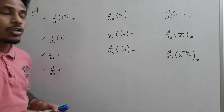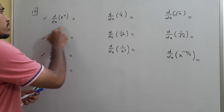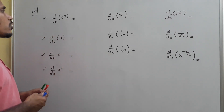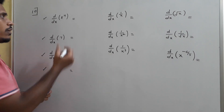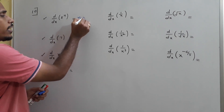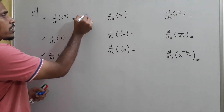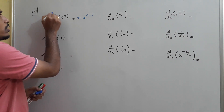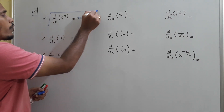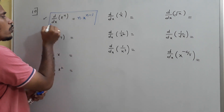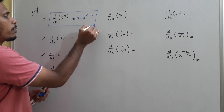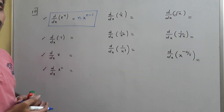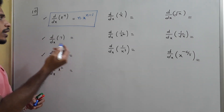These problems are based on the standard derivative: d/dx of x^n equals n times x to the power n minus 1. This formula is true for all values of n.